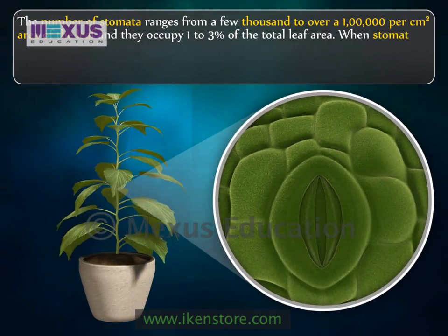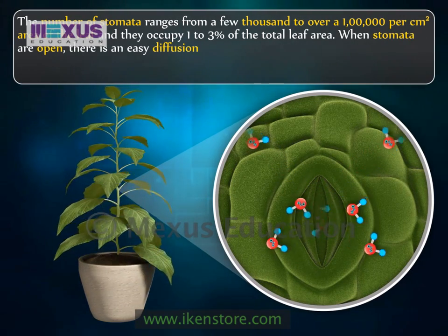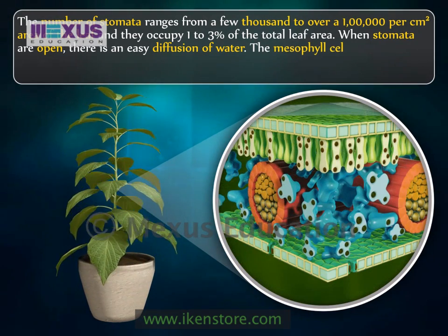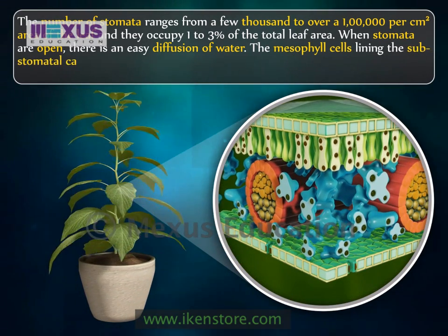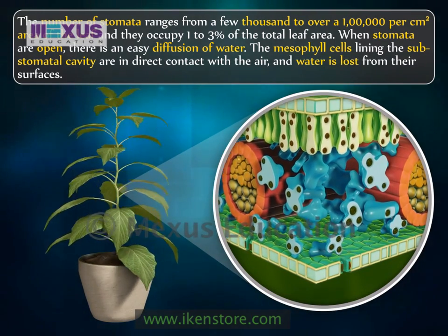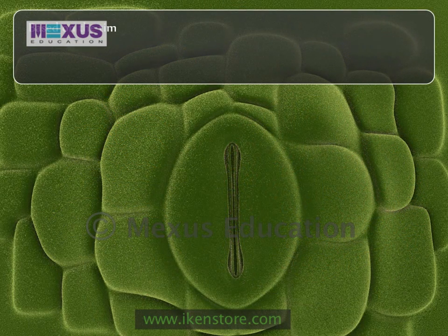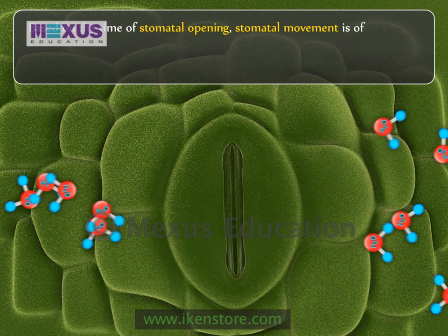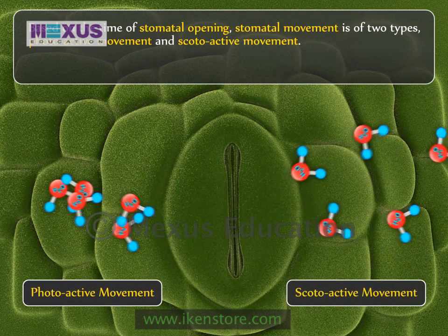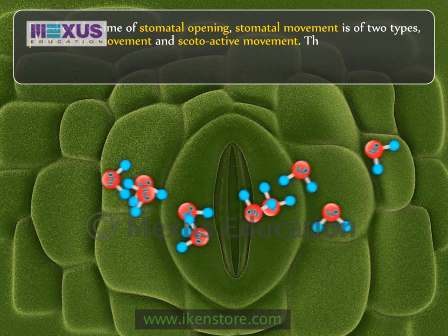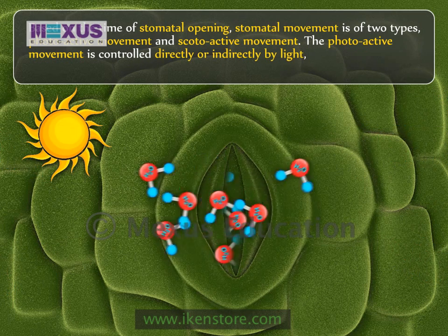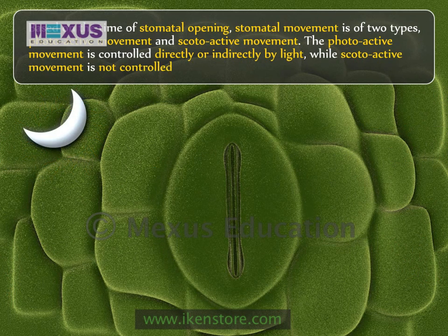Unlike other epidermal cells, guard cells contain chloroplasts and carry on photosynthesis. The size and shape of the stomatal aperture varies with the heterogeneity and shape of the guard cells. When the stomata are open, there is easy diffusion of water. The mesophyll cells lining the sub-stomatal cavity are in direct contact with the air and water is lost from their surfaces. Based on the time of stomatal opening, stomatal movement is of two types: photoactive movement and scotoactive movement. The photoactive movement is controlled directly or indirectly by light, while the scotoactive movement is not controlled by light.